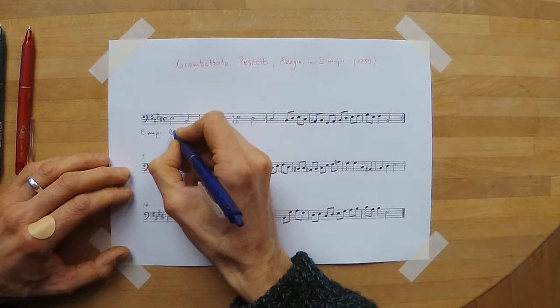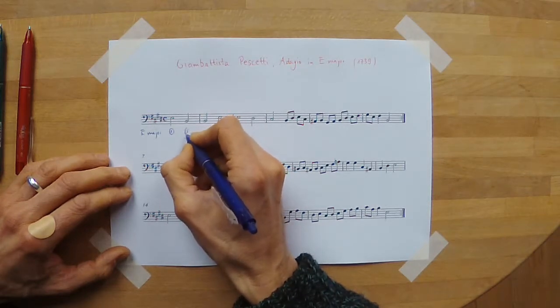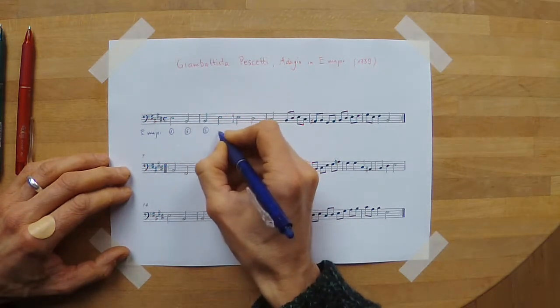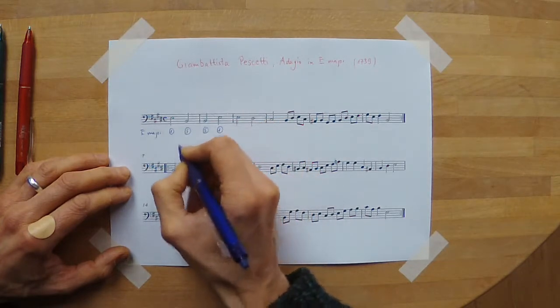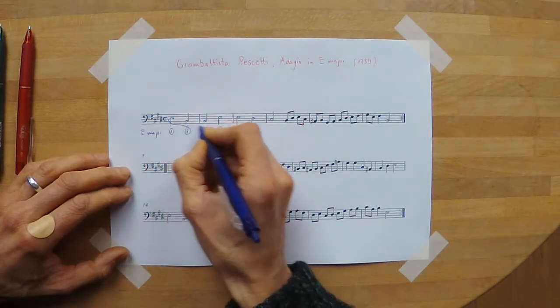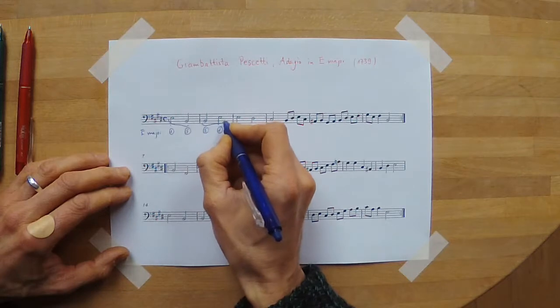So for the very first two measures I see, in the scale of E major, I see one five five one.